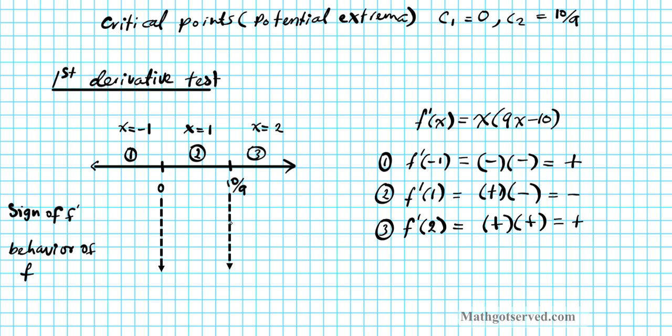Now, we have the signs of our first derivative. Interval 1, we have positive. Interval 2, we have negative. And interval 3, we have positive. So what does that tell us about f? If the first derivative is positive, then the function is increasing. So it's increasing on these two intervals. And if the first derivative is negative, the function is decreasing. So what's happening at these critical points? If you're increasing and then decreasing, this is a local max. And then here, if you're decreasing and then increasing, this is a local min.